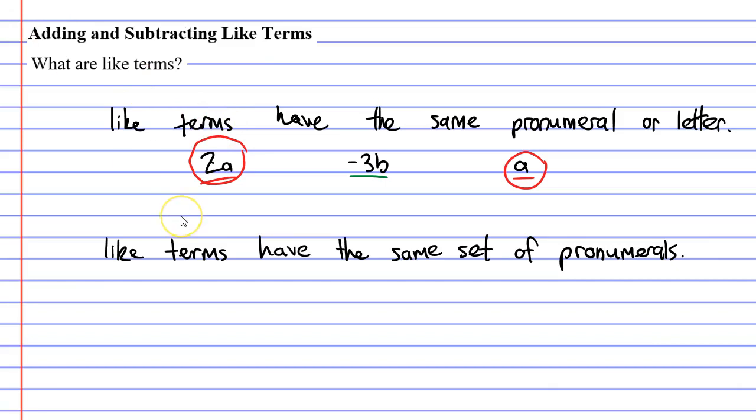So, I'm going to write down three terms. The three terms are going to be a squared b. We'll have 3ba squared, and we'll have negative 2ab squared. When you look at these three terms, you'll notice that they all have the same pronumerals, but they don't have the same set of pronumerals.